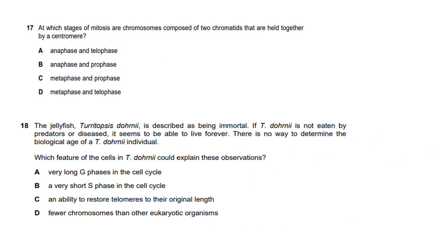Question seventeen: at which stages of mitosis are chromosomes composed of two chromatids held together by a centromere? During anaphase, chromatids are being pulled apart. During telophase, chromatids are in separate forming cells. Metaphase and prophase are the stages where chromosomes are still whole — still composed of two chromatids. So the answer is C: metaphase and prophase.